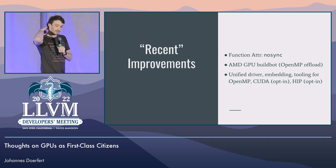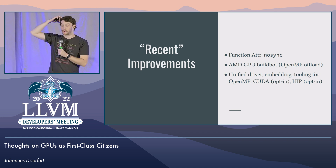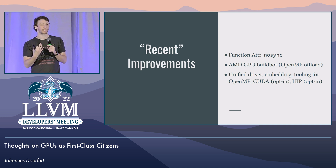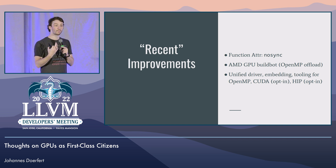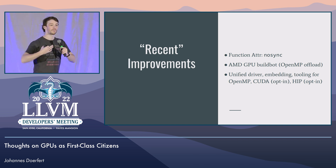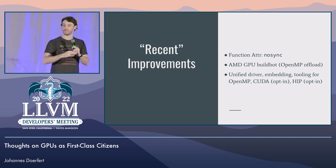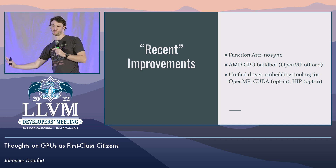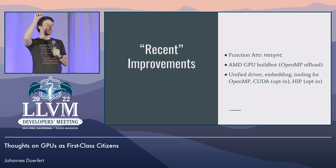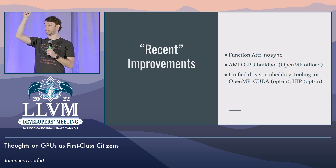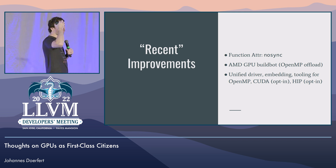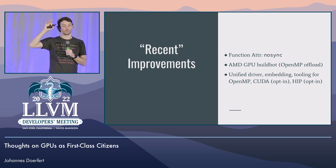We have some recent improvements — 'recent' in quotes. The nosync attribute is actually quite useful because GPUs inherently talk about parallelism. In the CPU world, we always kind of ignored that — we pretended everything was sequential, one thread. We have one build bot that runs code on a GPU, which is great, it's better than zero. But it only runs a very limited amount of code: OpenMP offload code.